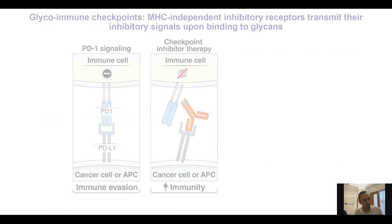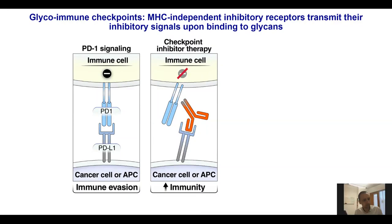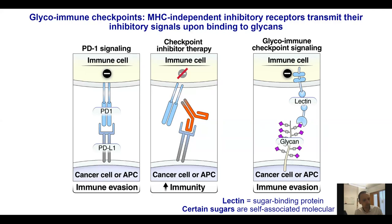In particular, I will focus on something called glycoimmune checkpoints. I'm sure all of you are quite familiar with classic immune negative checkpoints that work by protein-protein interactions. For example, the protein PD-1 can be expressed on immune cells and bind to another protein called PDL-1 on the surface of target cells, including cancer cells. These interactions inhibit immune functions and allow cancer cells to evade immune surveillance. Now recently, it has become clear there is another class of immune negative checkpoints that work by binding to sugars — that's why they're called glycoimmune negative checkpoints.